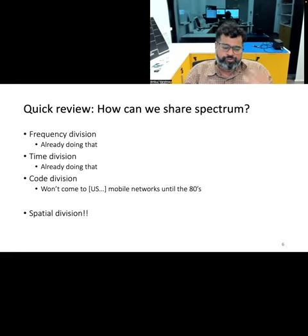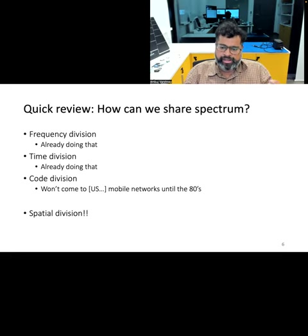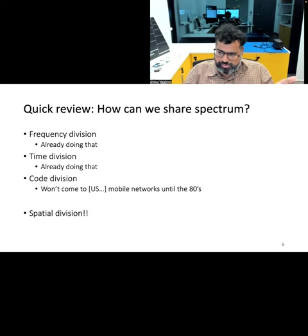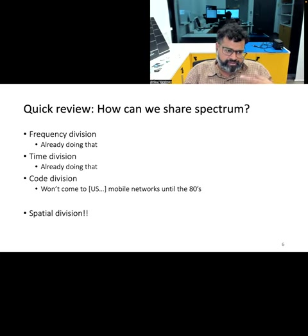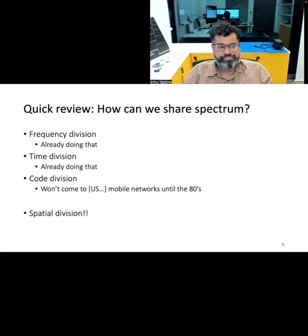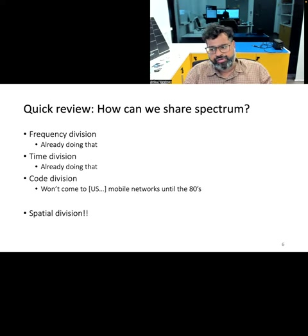So if you want to increase the number of users who can communicate using a mobile phone connection, how should we do it? We have studied various methods in this course — operating on different frequencies, ensuring transmissions don't occur at the same time (time division), or assigning different codes to different transmitters so that even if they overlap in time and frequency, we can still separate their transmissions. However, one thing we haven't looked at is separating these transmissions in space, also called spatial division, which is highly relevant for cellular communication.